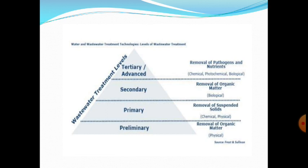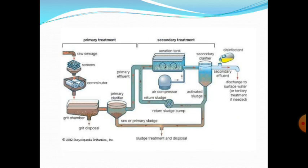In preliminary treatment, removal of large solids takes place by physical methods. In primary treatment, removal of suspended solids takes place using both physical and chemical methods. In secondary treatment, removal of organic matter takes place by biological methods. In tertiary treatment, removal of pathogens and nutrients takes place by chemical, photochemical, and biological methods. In primary treatment, unit operations are mostly used, while in secondary treatment, unit processes are used.